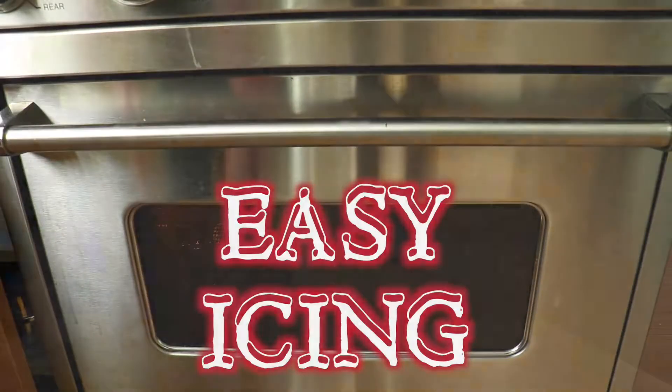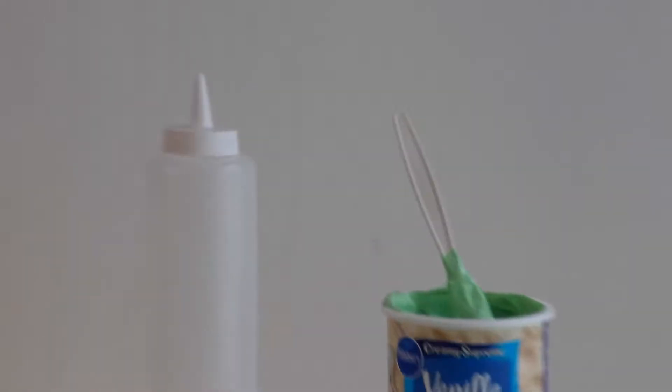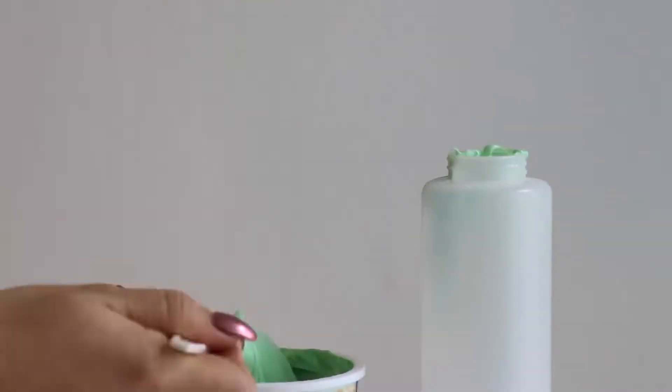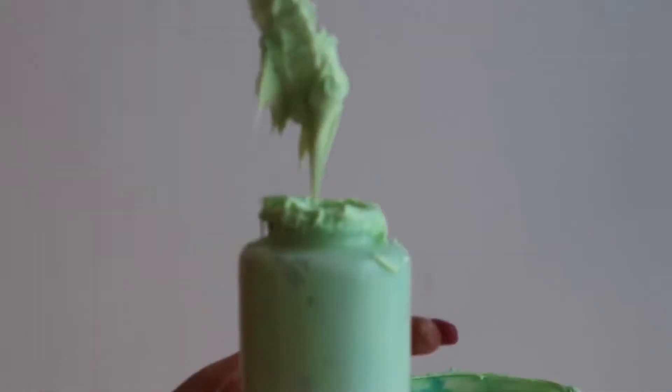Now onto easy icing. So all you need is some Christmas icing and a squeezy bottle. So you're just going to fill up the squeezy bottle with the icing. And then you can use it to ice your Christmas cookies.